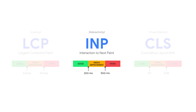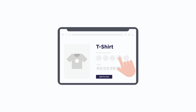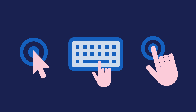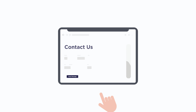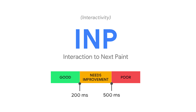INP measures a page's overall responsiveness by tracking the longest delay between when a user initiates an interaction — such as a click, tap, or key press — and when the browser presents the next frame with visual feedback.